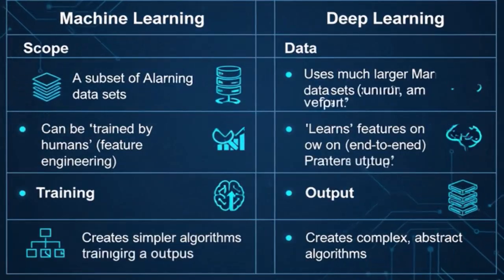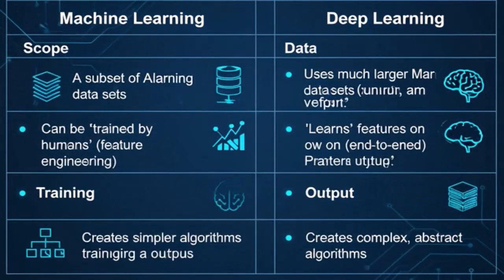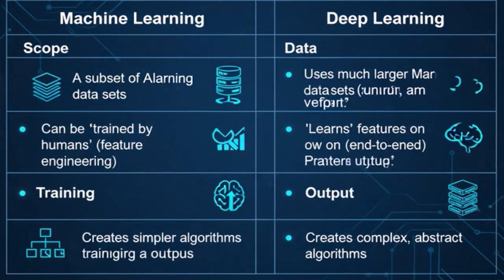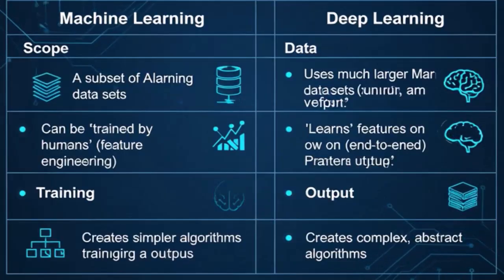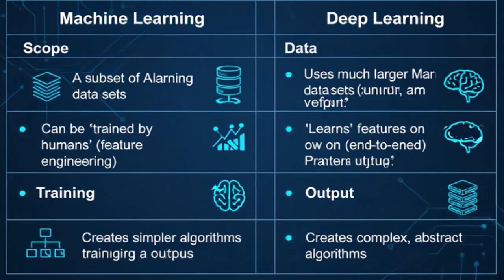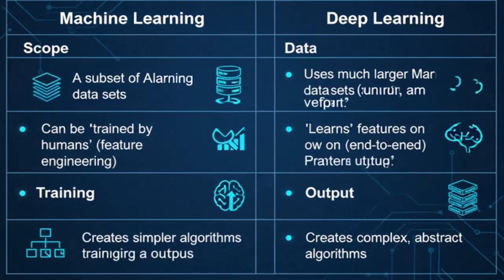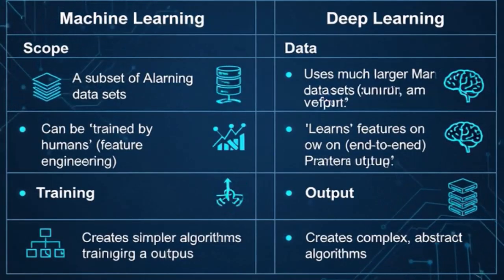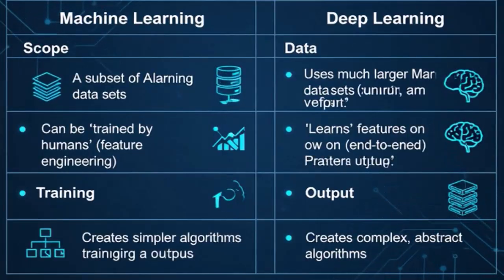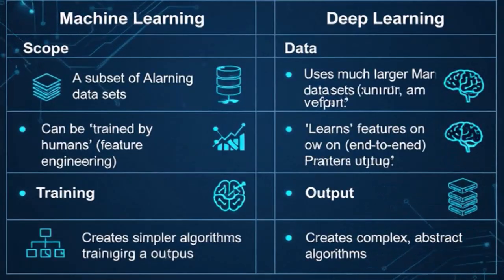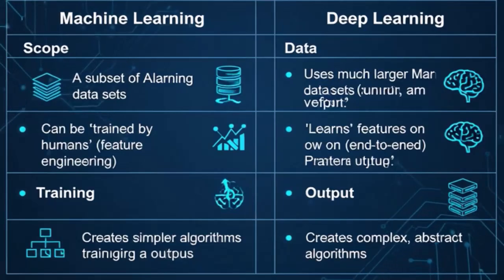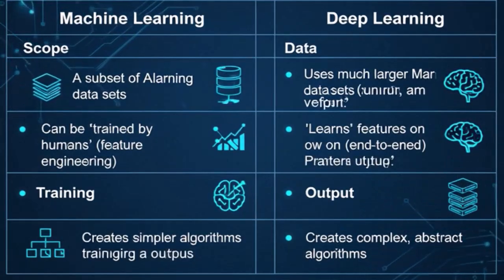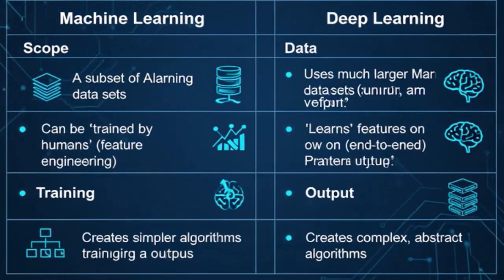Regarding training, this is a significant difference. In traditional machine learning, there's often a crucial step called feature engineering, where human experts manually select and transform raw data into features that the algorithm can understand. Deep learning, however, excels at learning these features on its own, directly from the raw data. This end-to-end learning capability is a major advantage as it automates a typically laborious human task.